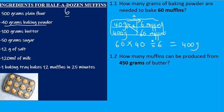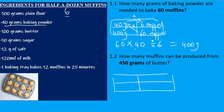Question 1.2: How many muffins can be produced from 450 grams of butter? Again, draw a table. You need 100 grams of butter to bake six muffins. Now if you have 450 grams of butter, how many muffins will you produce?